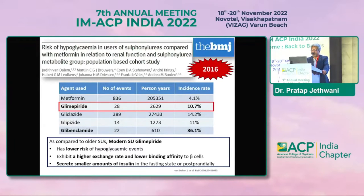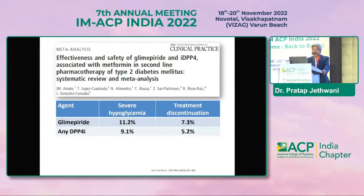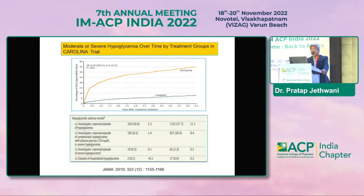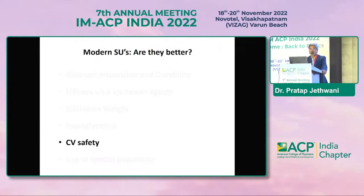Regarding hypoglycemia — we all agree sulfonylureas increase the risk, but among them glimepiride is better, and gliclazide and gliclazide modified release have the best evidence for least hypoglycemia, even compared to glimepiride. Compared to DPP-4 inhibitors, most trials show that treatment discontinuation because of hypoglycemia is not a major issue — and that is the beauty of these molecules. In the CAROLINA trial, hypoglycemia was high mainly in the first two to three months due to titration of sulfonylurea up to 4mg in patients with baseline HbA1c of only around 7.5%.